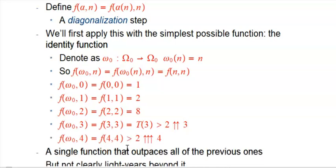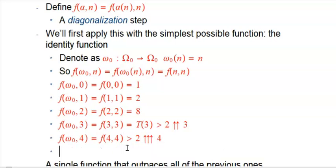Now it starts to get impressive. When n is 3, we look up the f3 function: f of 3 comma 3 — we've been calling that T of 3 — that's bigger than 2 double-up 3. Moderately big, but not crazy. And then when n equals 4, we're accessing the f4 function, and that's getting kind of big.